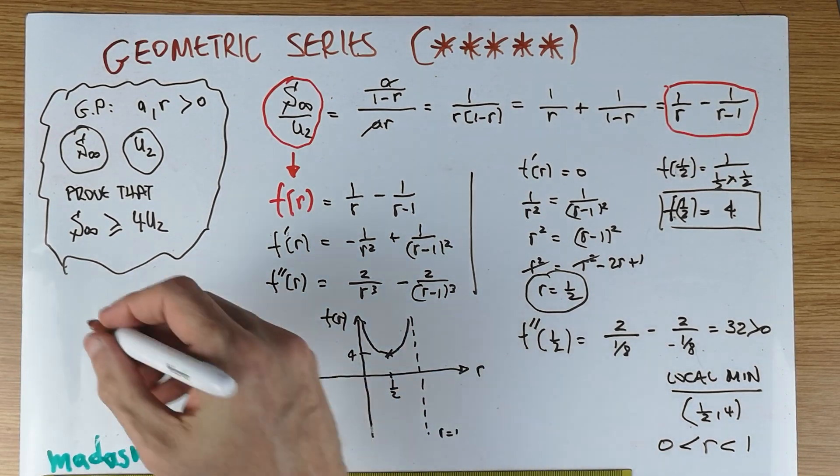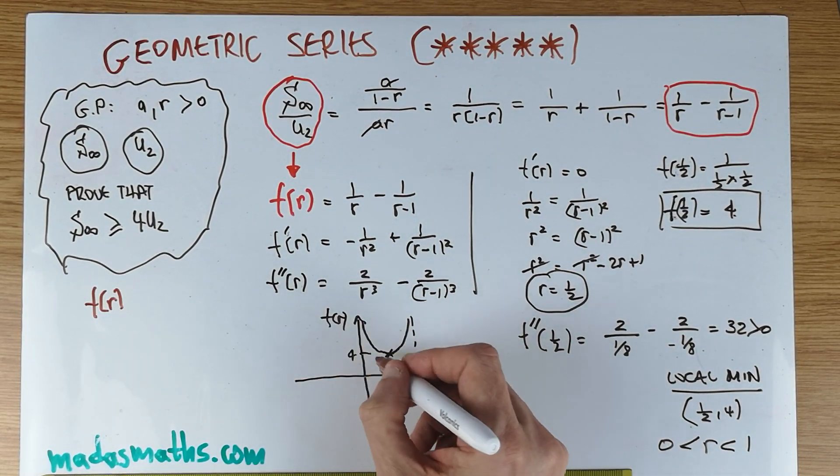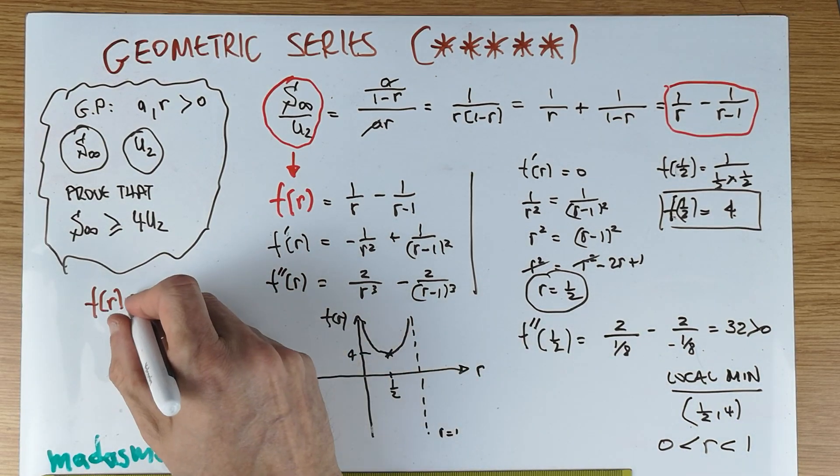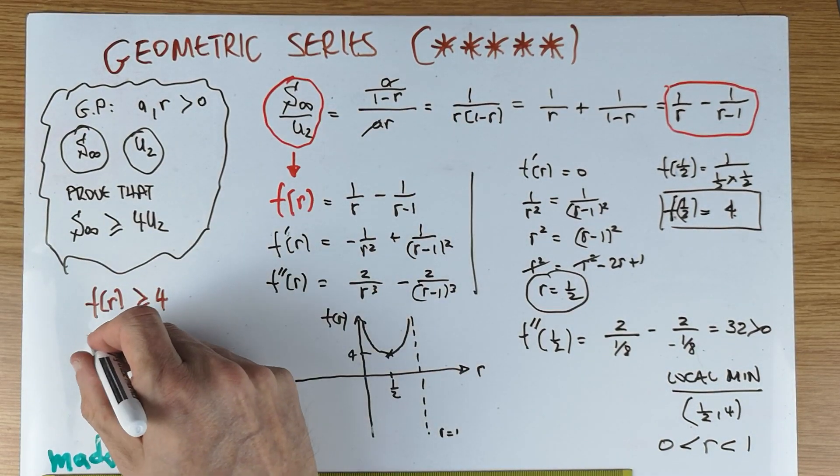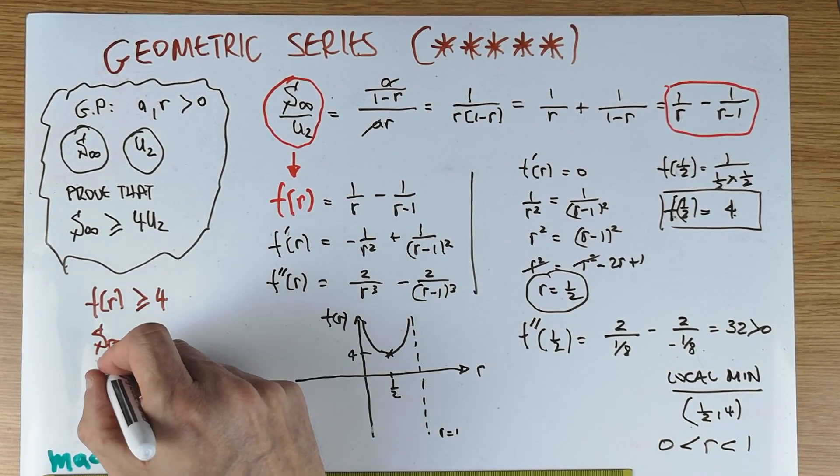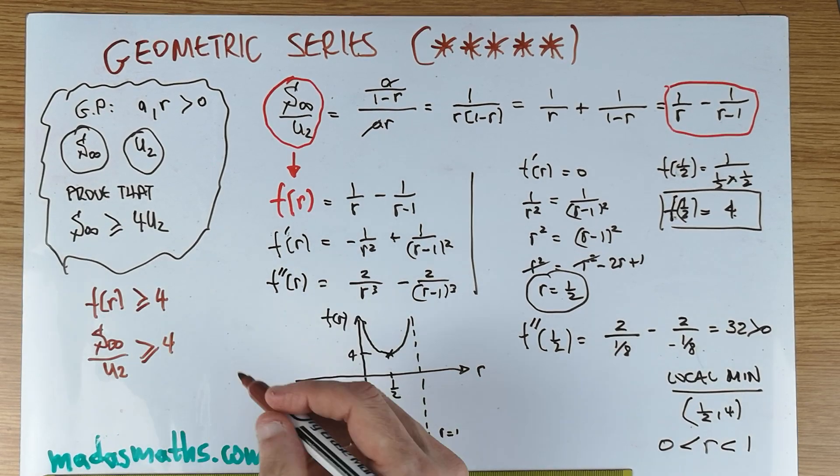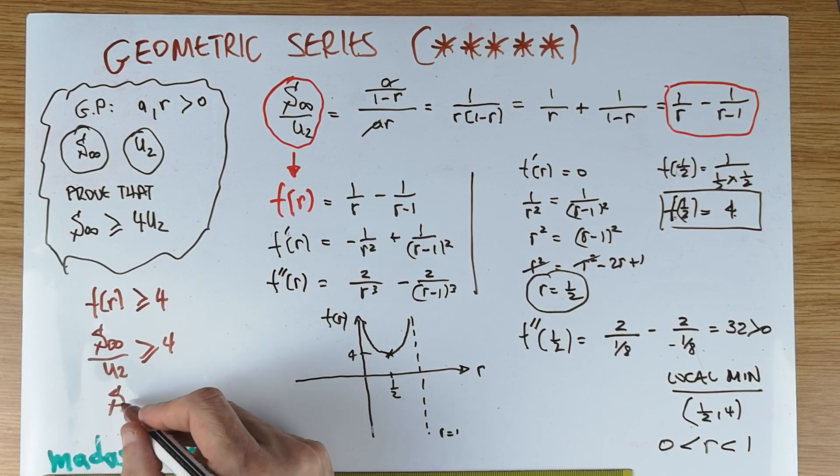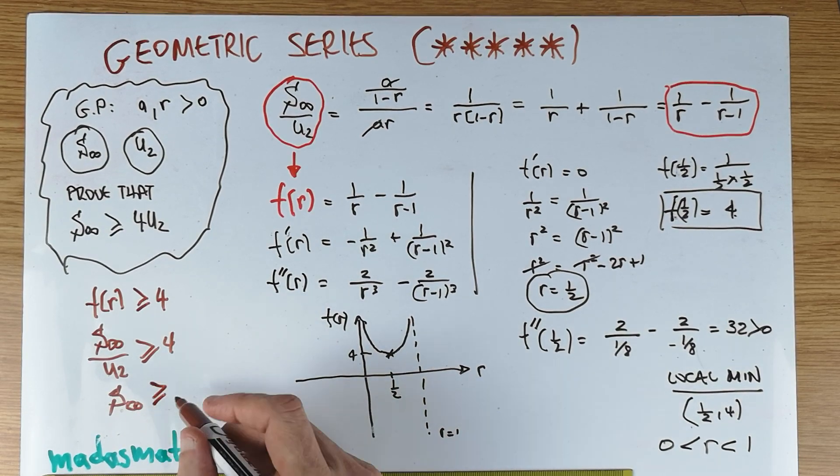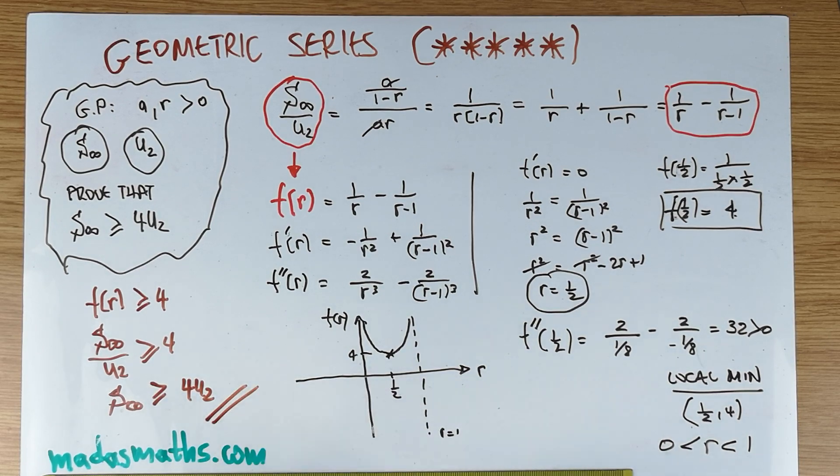It's a little bit messy to have that presented on my board, but what have I found so far? I have found that my F of R is at least equal to four. But what is F of R? F of R is, of course, the sum to infinity over my U2 is greater or equal to four. And therefore, in this particular case, I am done. I've proven the desired result.